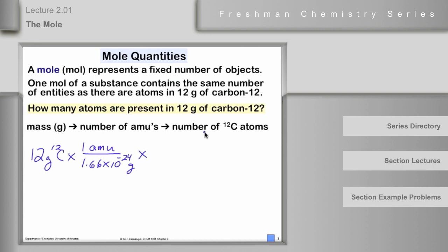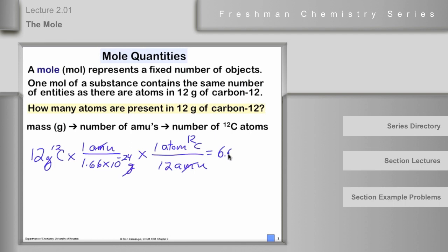The next step is to get the number of carbon atoms from the number of AMUs. One atom of carbon-12 is exactly 12 AMUs by definition. The AMUs cancel, and our answer will be in atoms of carbon. The number, once we do the arithmetic, is 6.02 × 10²³ atoms of carbon-12.